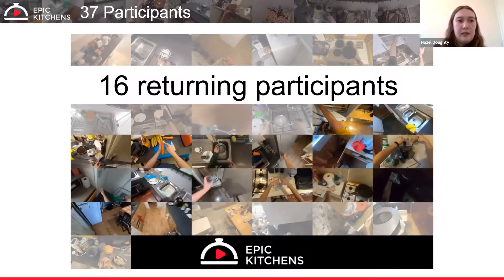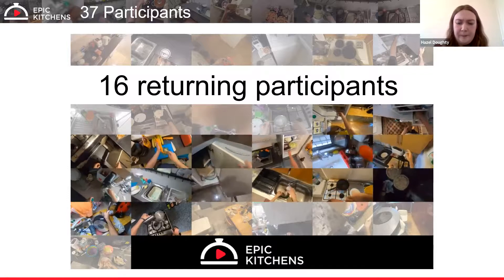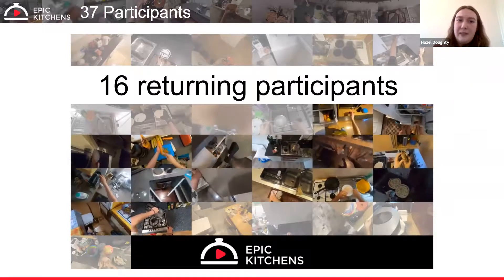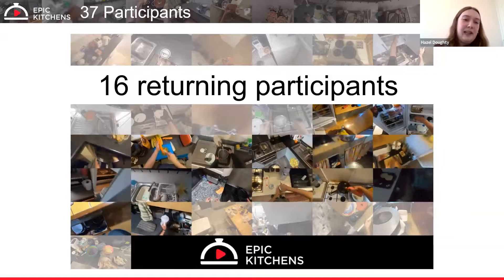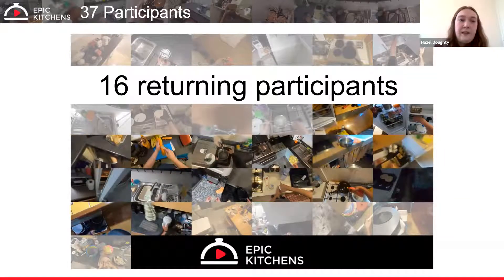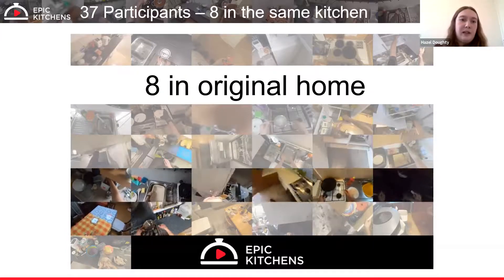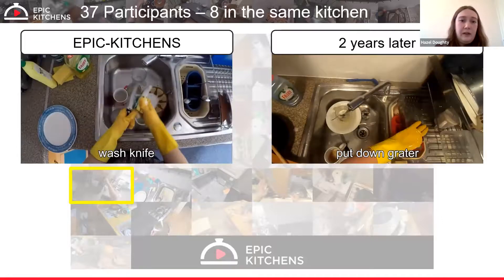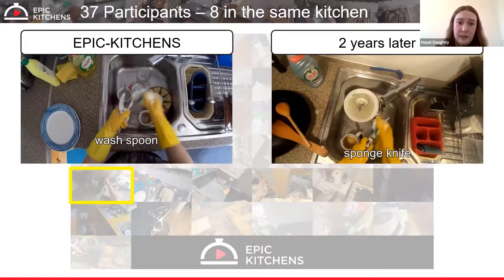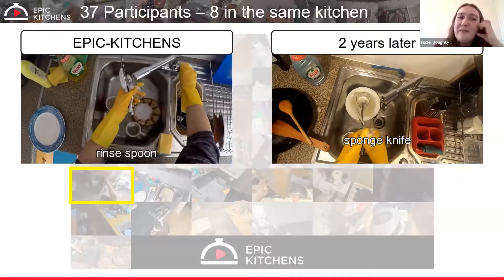An interest with the new dataset is the domain gap between footage from 2018 and the new footage from 2020. Although people are still cooking in their kitchens, small details — an upgraded camera, slightly different participants, and denser action annotations — create a surprisingly large domain gap. Returning participants allow study of this gap: one participant is shown doing the washing up in both 2018 and 2020, and the footage looks noticeably different, posing a challenge for video recognition models.